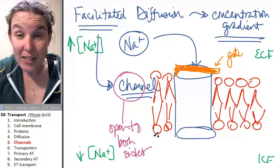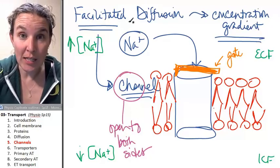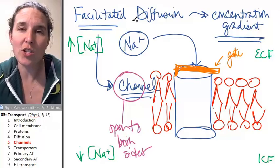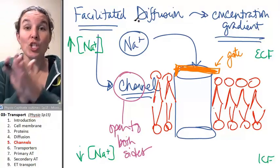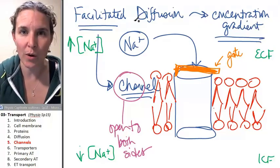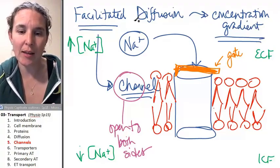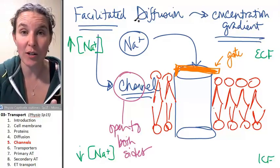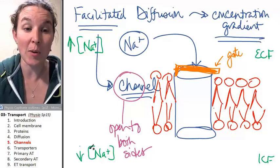There are other kinds of transporters involved in, or that enable facilitated diffusion that don't operate that way. So channels are one type of transporter or protein in the cell membrane that enables facilitated diffusion. There's another one that we're going to talk about in the next section.